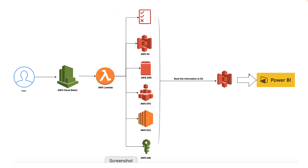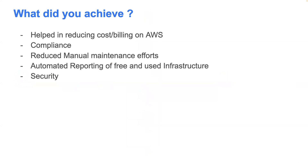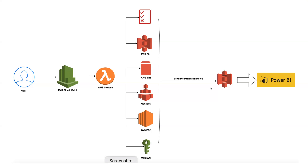Point four: reporting is also automated. Without Power BI reporting, people wouldn't even know what was auto-healed. If management asks what went out of compliance or wants to take action against those people, you need that data. By using this project, reporting is fully automated. Finally, security is greatly improved — the project does many things that enhance AWS security.